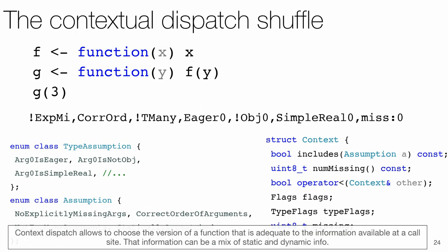Finally, we use contextual dispatching. In R we track several predicates about the runtime state of a program at a call site. These can be anything, but should be efficiently computable. Our context for the call to g contains the information that there are no explicitly missing arguments, the args are passed in the correct order, there isn't too many of them, and the first argument is a non-object scalar real.